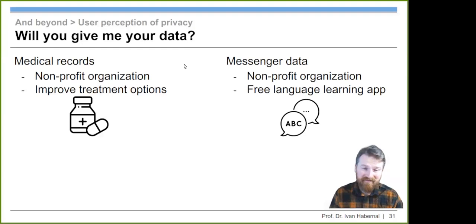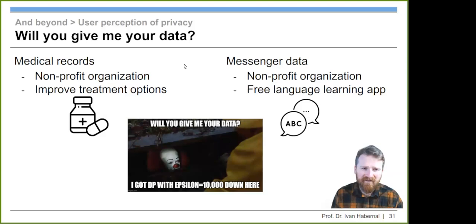The other scenario was that I want to ask you for your messenger data, like WhatsApp, the last 50 WhatsApp messages. Again, the goal is I'm a good guy and I just want to create a learning app for language learning, which everybody can use. It's for the better good, so to say. These were these two scenarios. My question would be, will you give me your data if I guarantee you a differential privacy epsilon of 10,000? Well, that's a question. Will you give me your data? Let's find out. We asked a couple of people, hundreds of people in this behavioral study.